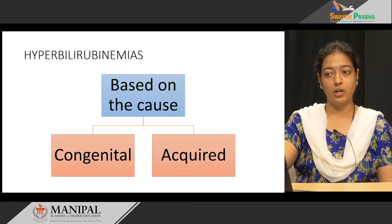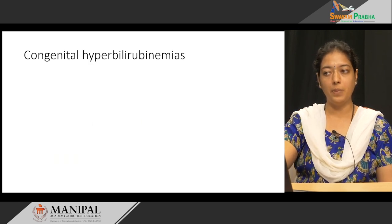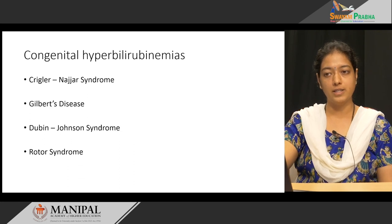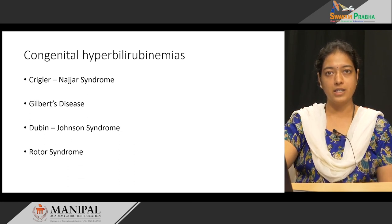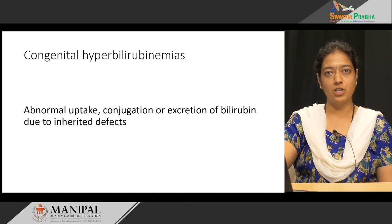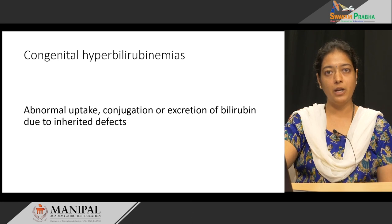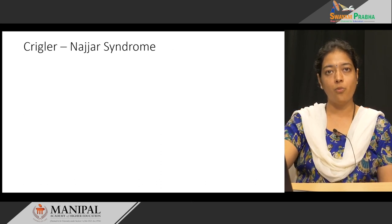Based on the cause, jaundice can also be classified into congenital and acquired. Coming to congenital hyperbilirubinemia, there are four types: Crigler-Najjar syndrome, Gilbert's disease, Dubin-Johnson syndrome, and Rotor syndrome. The congenital hyperbilirubinemias are inherited defects due to abnormal uptake, conjugation, or excretion of bilirubin.